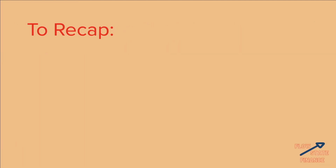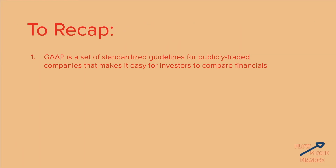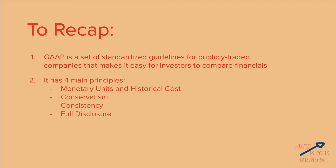So let's recap what we covered today. Number one: GAAP is a set of standardized guidelines for publicly traded companies that makes it easy for investors to compare financials. It has four main principles. Monetary units and historical costs — monetary units is the idea that everything in a financial statement must be expressed as monetary units: dollars, euros, pounds, etc.